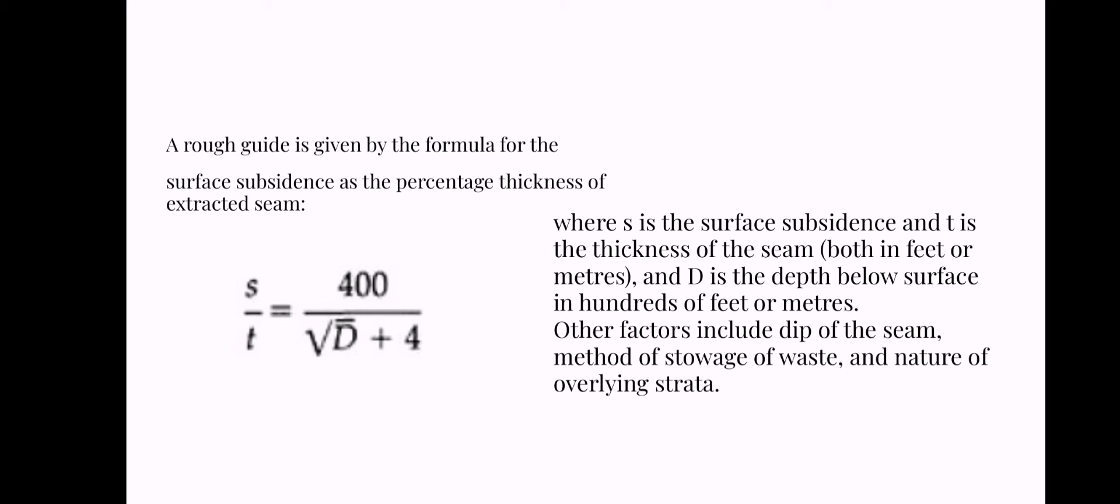A rough guide is given by the formula for surface subsidence as a percentage of thickness extracted. S is the surface subsidence, T is the thickness of the seam, and D is the depth below surface in hundreds of feet or meters. Other factors include depth of the seam, method of stowage of waste, and nature of overlying strata.